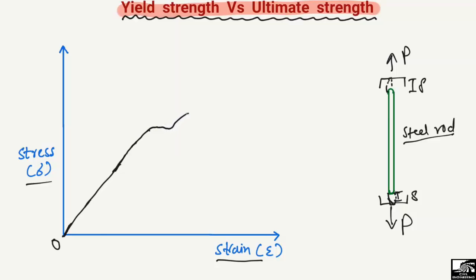At the initial stage it increases linearly, and then there is a certain point where the stress will decrease. This point where the stress decreases is known as the yield point, and the strength value here will be known as the yield strength of the steel rod.